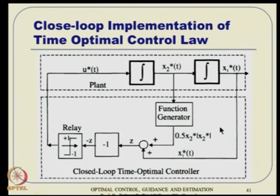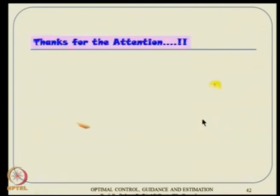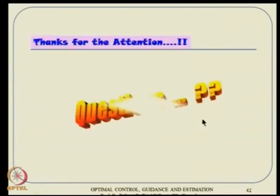The final control law can be implemented by defining z = x_1 + ½x_2|x_2|: if z > 0, apply u* = −1; if z < 0, apply u* = +1; if z = 0, use the sign of x_2. This is a non-linear state feedback control even for a linear system — bang-bang control in closed-loop form. The implementation uses the double integrator plant outputs x_1 and x_2 directly, completing a fully state-feedback time-optimal controller. We will stop here; next lectures will cover fuel optimal and energy optimal control.